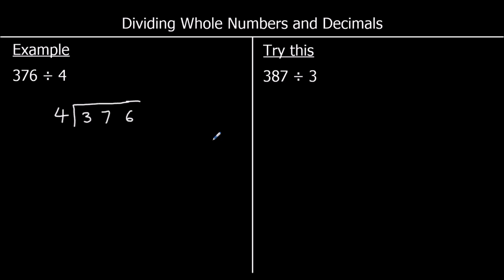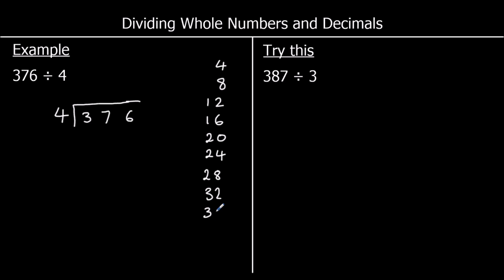When we're doing these division questions, it can be helpful to write down the times table of the number we're dividing by. So we're dividing by 4, so I'm going to write the 4 times table down the side. 1×4 is 4, 2×4 is 8, and so on — just adding 4 every time — all the way up to 10×4, which is 40.